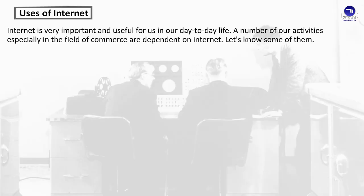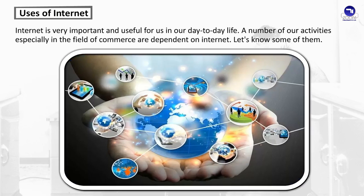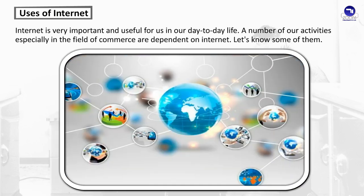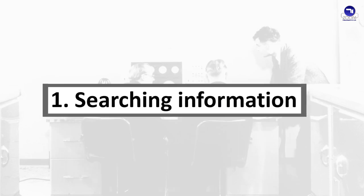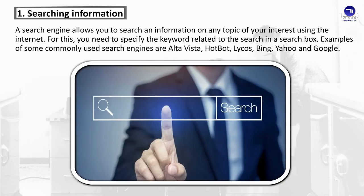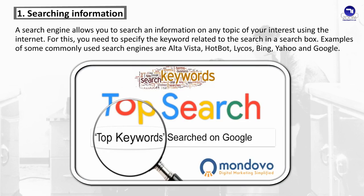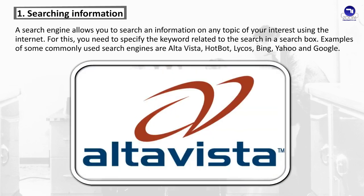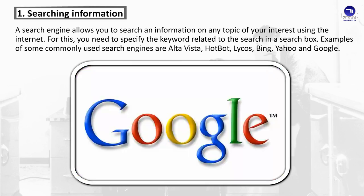Uses of Internet: Internet is very important and useful in our day-to-day life. A number of our activities, especially in the field of commerce, are dependent on the Internet. Searching Information: A search engine allows you to search for information on any topic of your interest using the Internet. You need to specify a keyword related to the search in a search box. Examples of commonly used search engines are AltaVista, HotBot, Lycos, Bing, Yahoo, and Google.